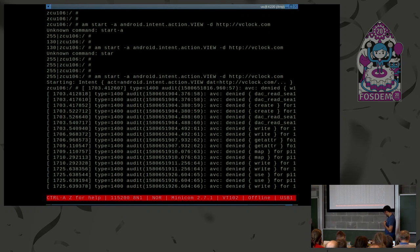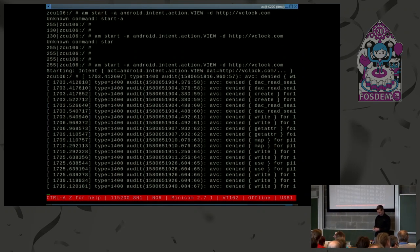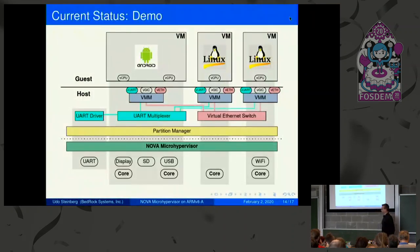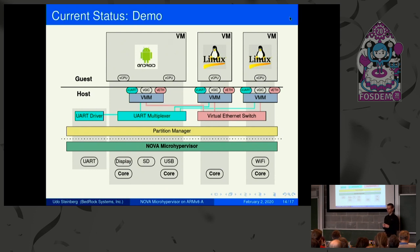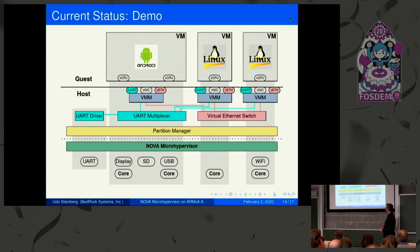Thanks Shantanu for this impressive demo. To recap what you just saw: three VMs — Android with two virtual CPUs, a Linux, and another Linux with a single core — demonstrating SMP and uniprocessor virtual machines. We showed different types of VMs, virtual devices, pass-through devices with the SMMU, a virtual Ethernet switch connecting all VMs, and host drivers. All of this on an ARMv8 system.